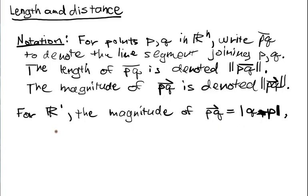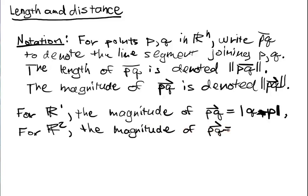That was relatively painless. For R2, the magnitude, also known as the length or distance of PQ, is equal to the square root of Q1 minus P1 square plus Q2 minus P2 square.